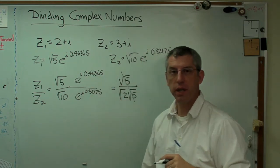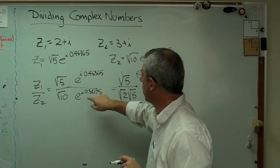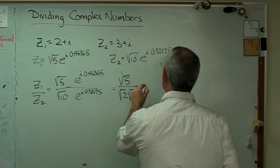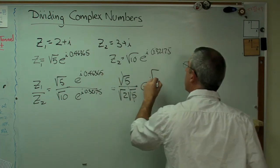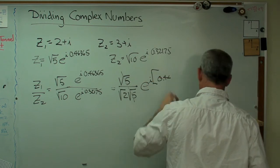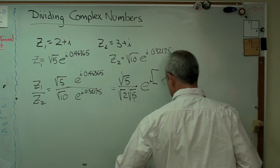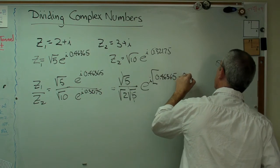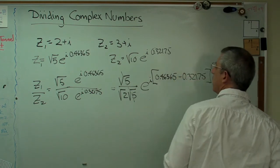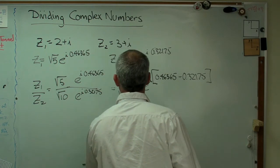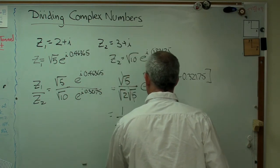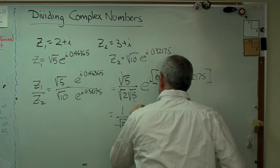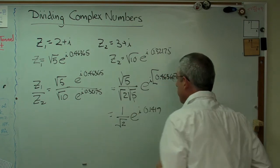Now, if I want to divide two exponentials, do you remember this? If I want to divide this by this, all I'm really doing is subtracting the exponents. So this is 0.46365 minus 0.32175. And that's going to give me 1 over the square root of 2 times e to the i times 0.1419.